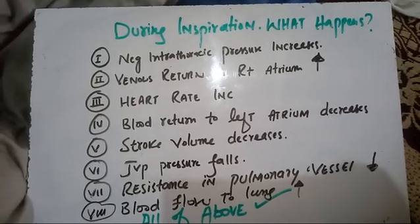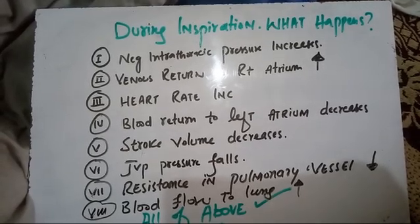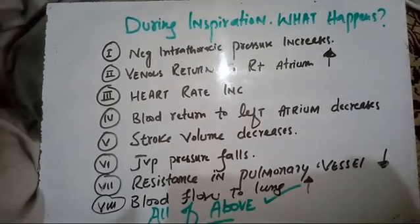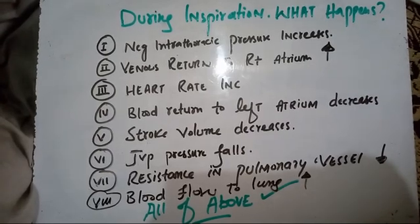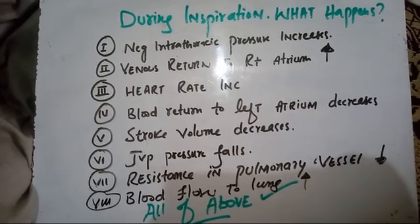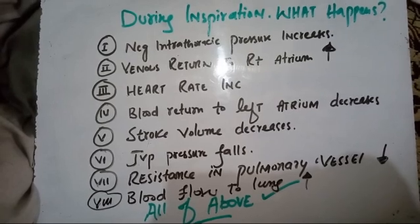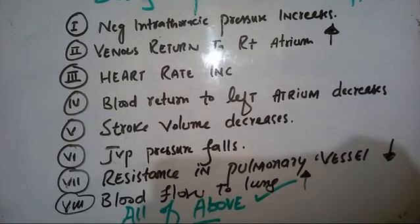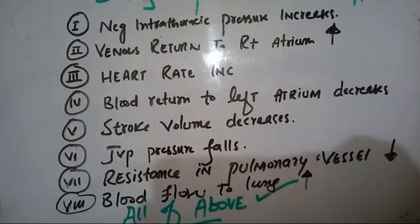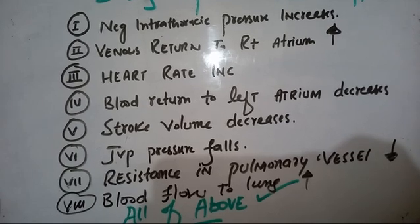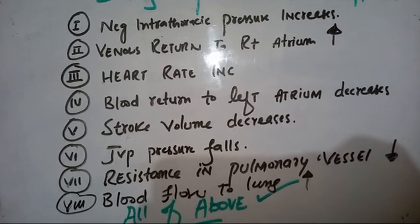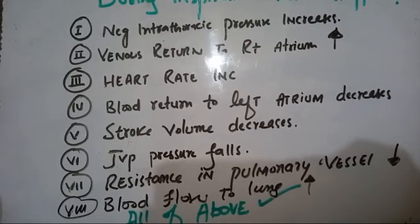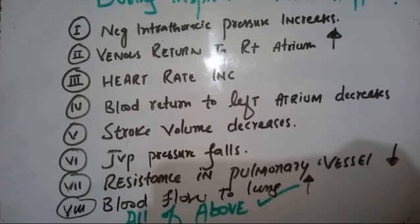Today we will talk about this MCQ: during inspiration, what happens? All of these are the correct options: negative intrathoracic pressure increases, venous return to the right atrium increases, heart rate increases, blood return to the left atrium decreases, stroke volume decreases, JVP falls, pulmonary vascular resistance increases, and blood flow to the lung increases. To understand all these concepts, we have to focus on the diagram.